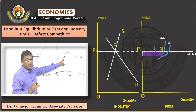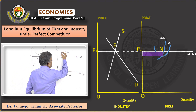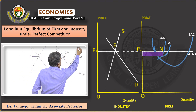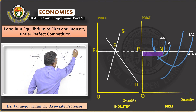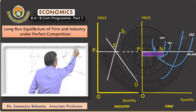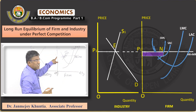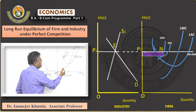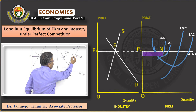The firm is operating in the long run, so we draw the long-run average cost curve and the long-run marginal cost curve. If the price P1 continues to prevail in the market, the firm can earn an even larger rectangle of abnormal profit in the long run, at point J where the long-run marginal cost equals marginal revenue.